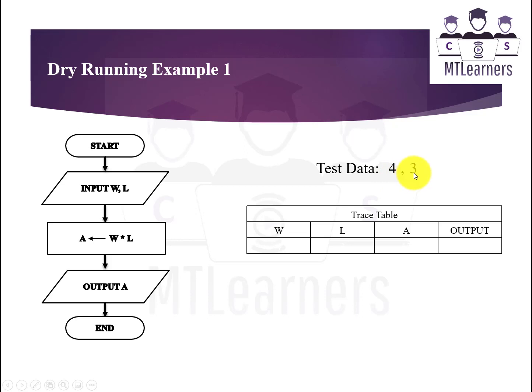This is the test data. The first one is represented as width and the second one is represented by length. This is the trace table where you can see there are two input values width and length, then output value will be area, and then final output will be shown in this box.